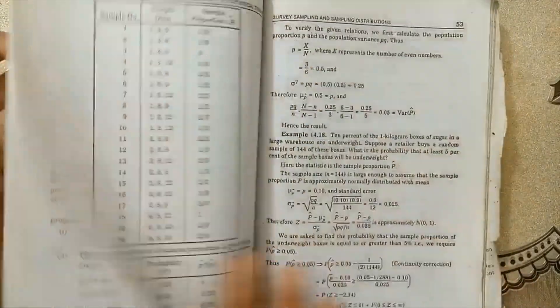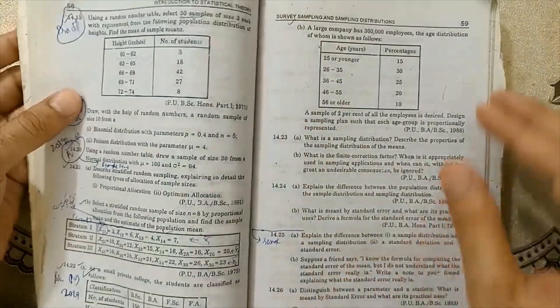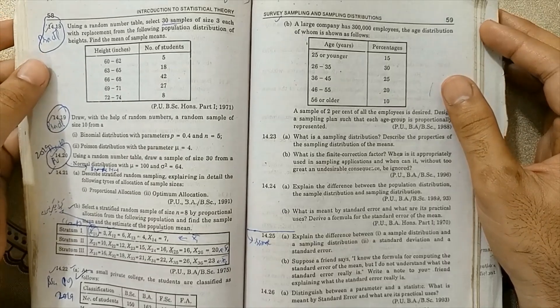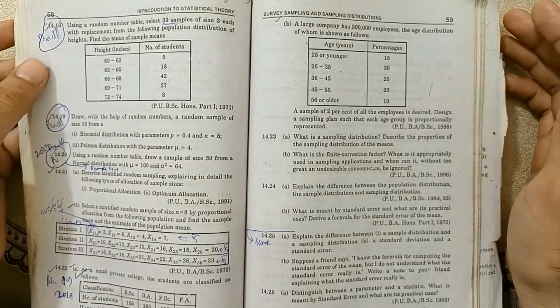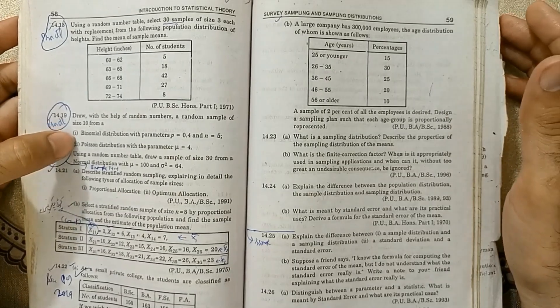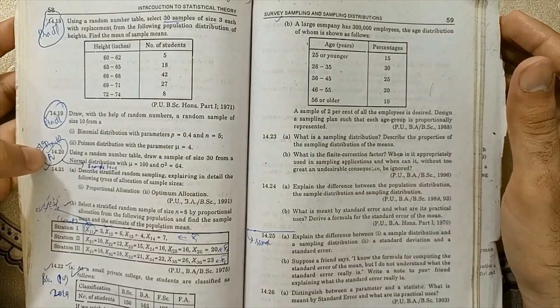Now I'm going to move to the exercises. Question 14.18 is very important for exams and for practical. Example 14.19 part 1 binomial distribution and part 2 are both very important. 14.20 is very important.